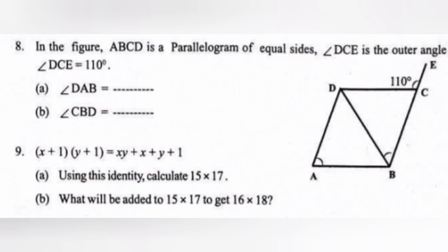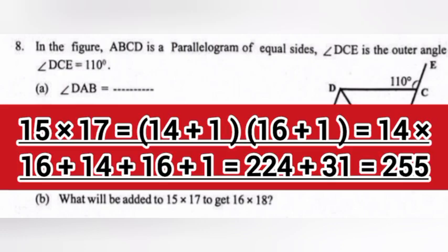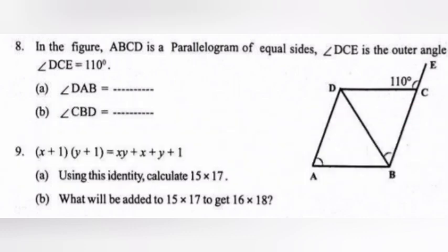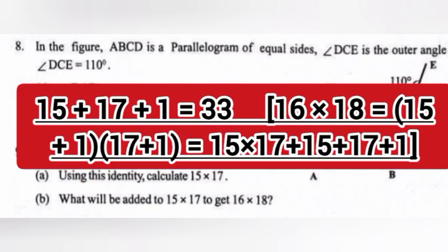9. Using the identity (X plus 1)(Y plus 1) equals XY plus X plus Y plus 1. A. Calculate 15 times 17. Answer: 15 times 17 equals (14 plus 1)(16 plus 1) equals 14 times 16 plus 1 equals 14 times 16 plus 14 plus 16 plus 1 equals 224 plus 31 equals 255. B. What will be added to 15 times 17 to get 16 times 18? Answer: 15 plus 17 plus 1 equals 33.